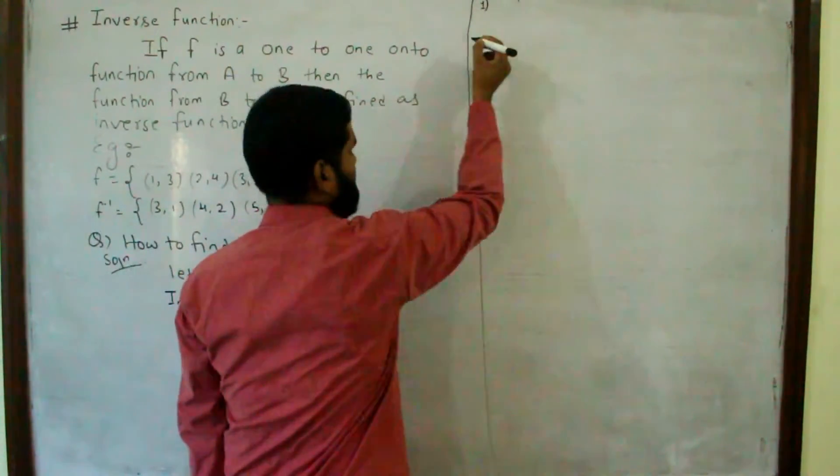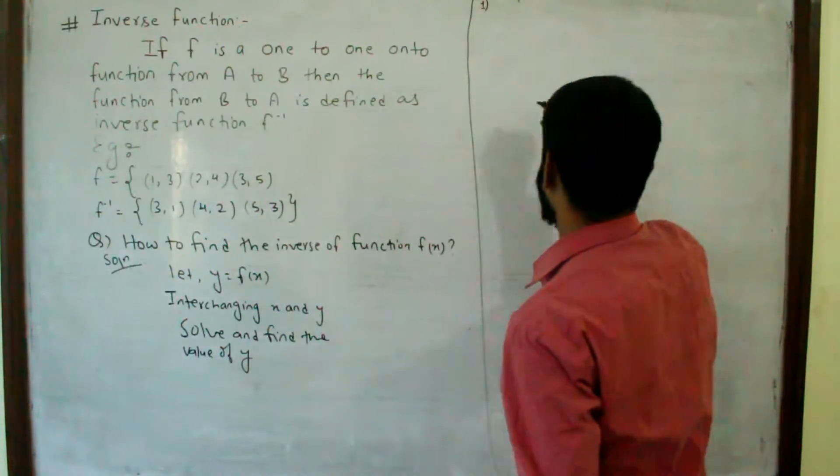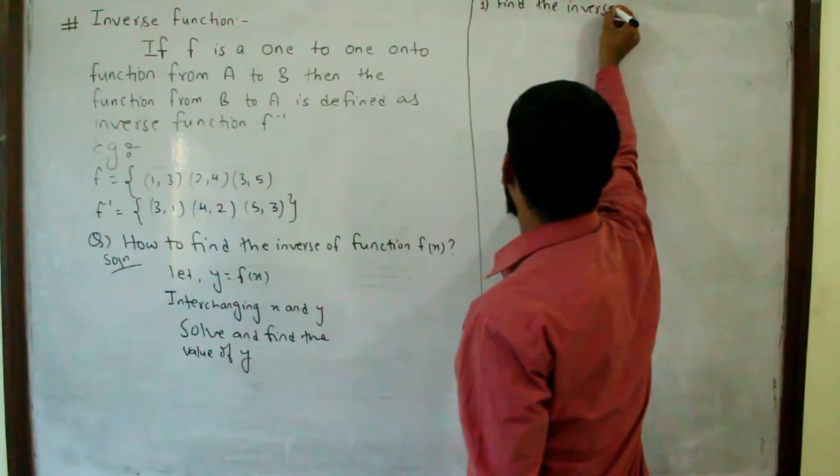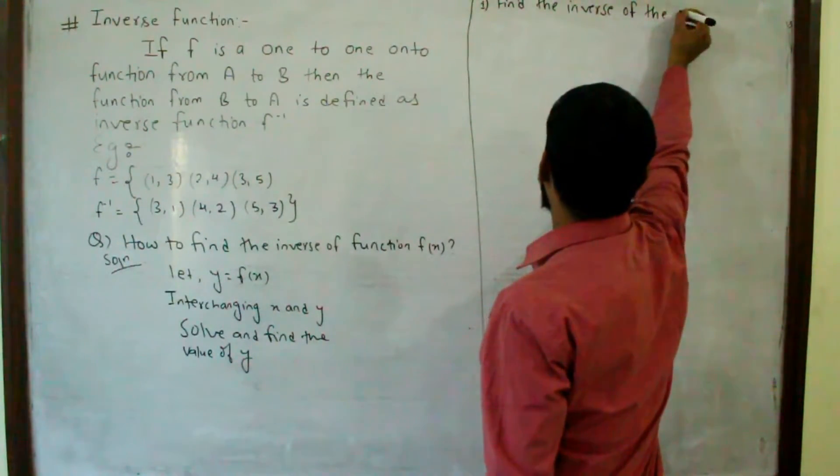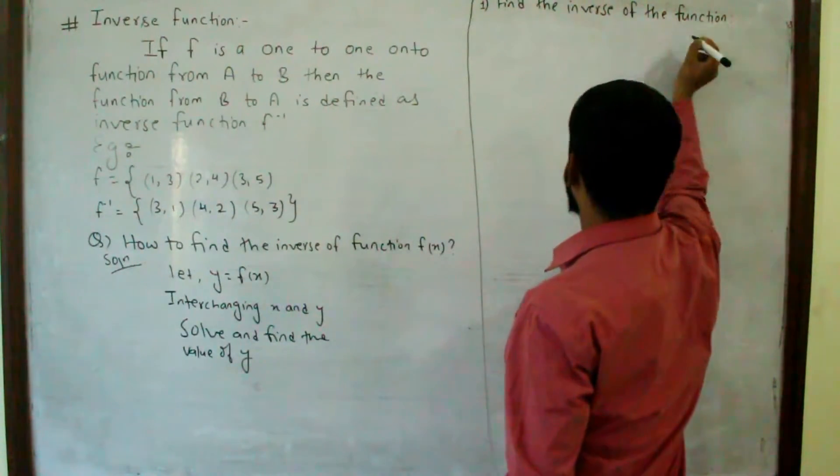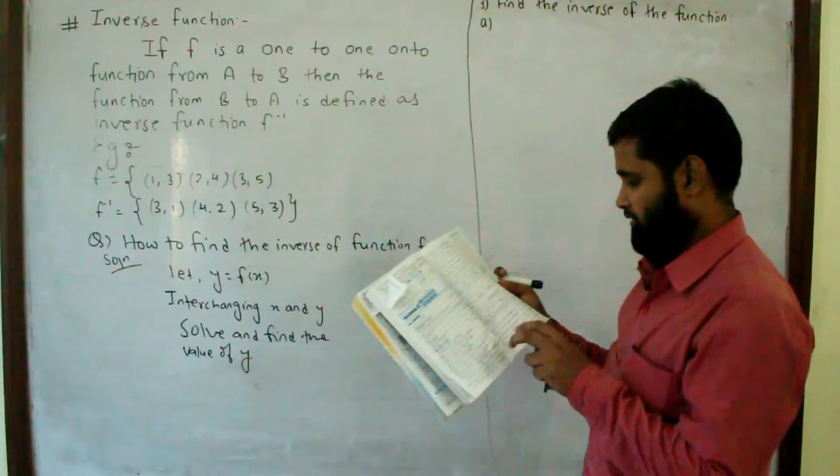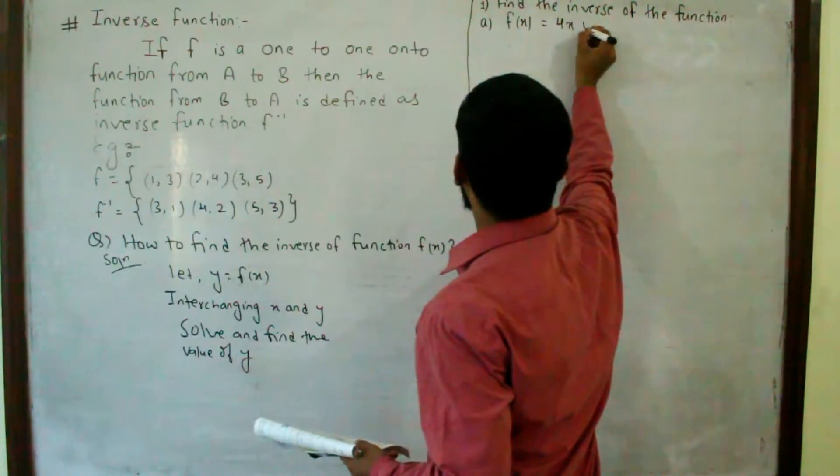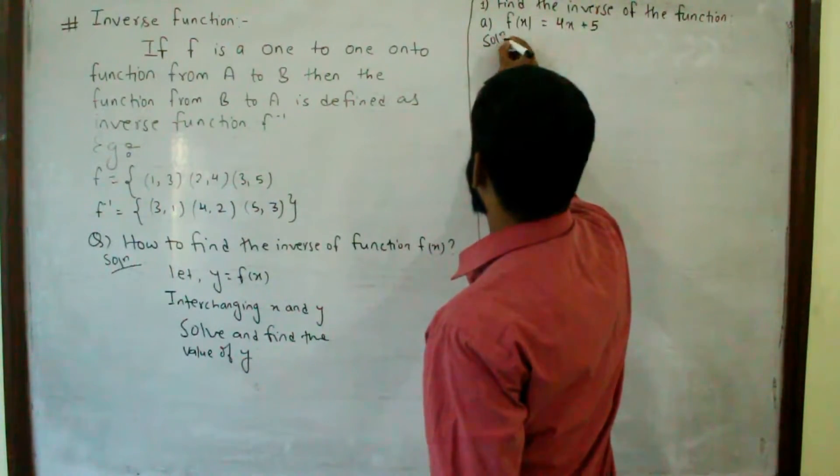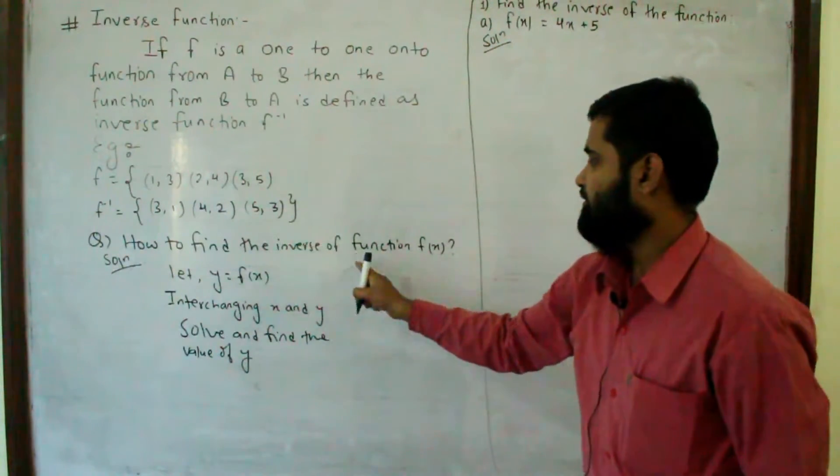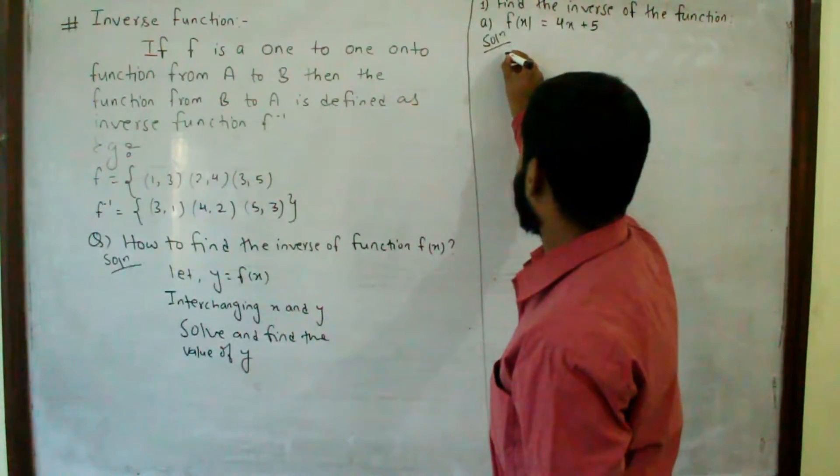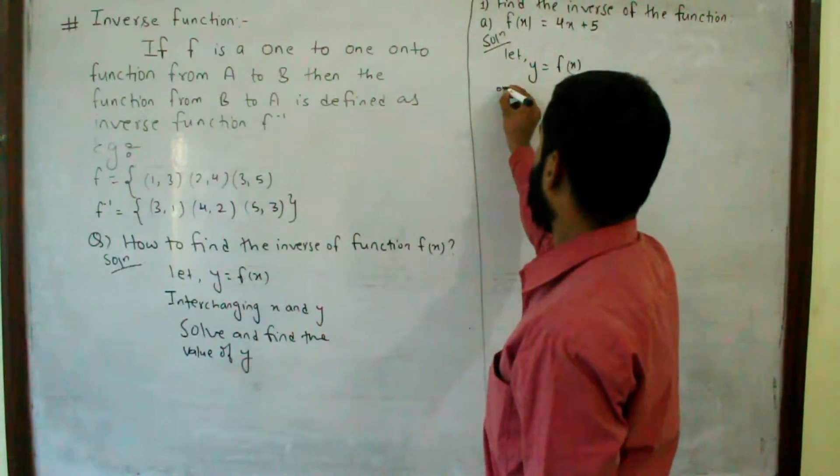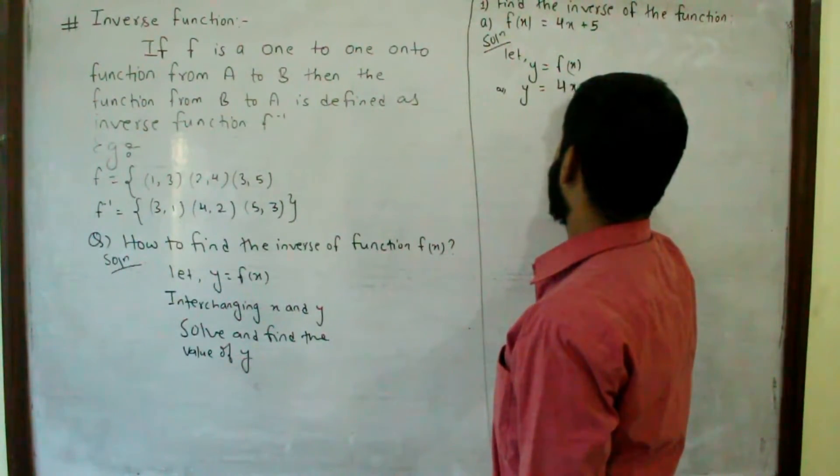Question number one: Find the inverse of the function f(x) equal to 4x plus 5. Let y equal to f(x), so y equals 4x plus 5.